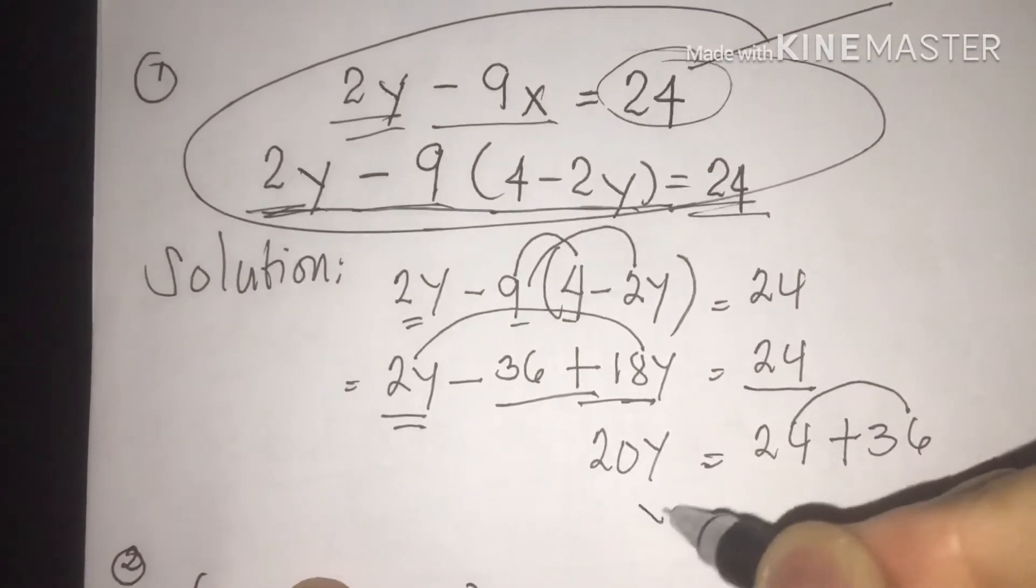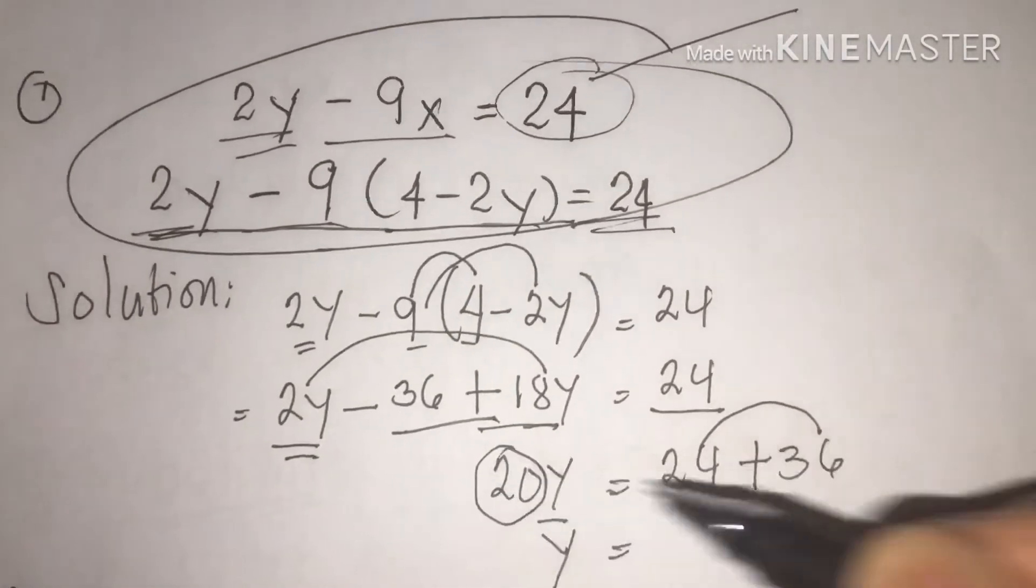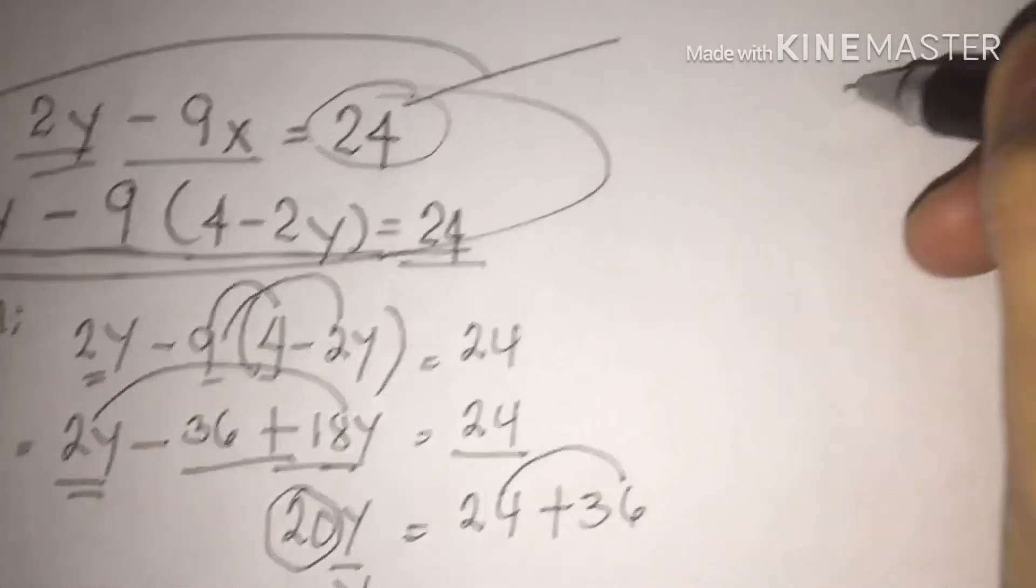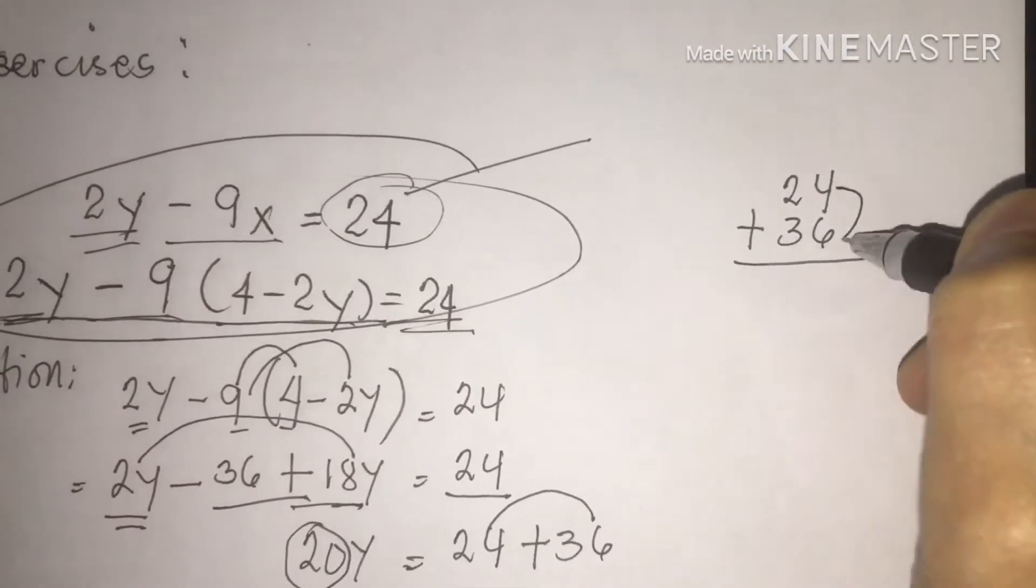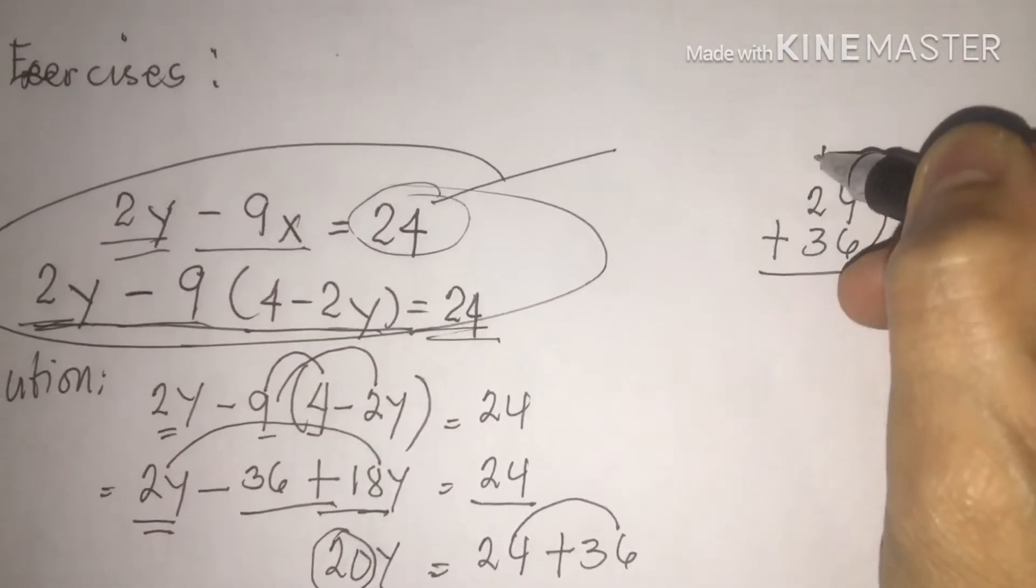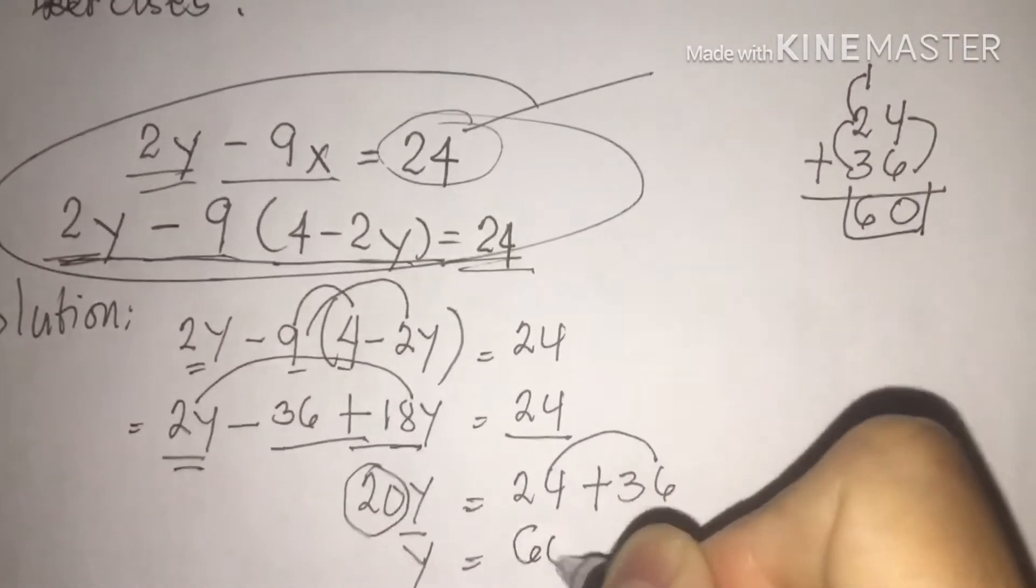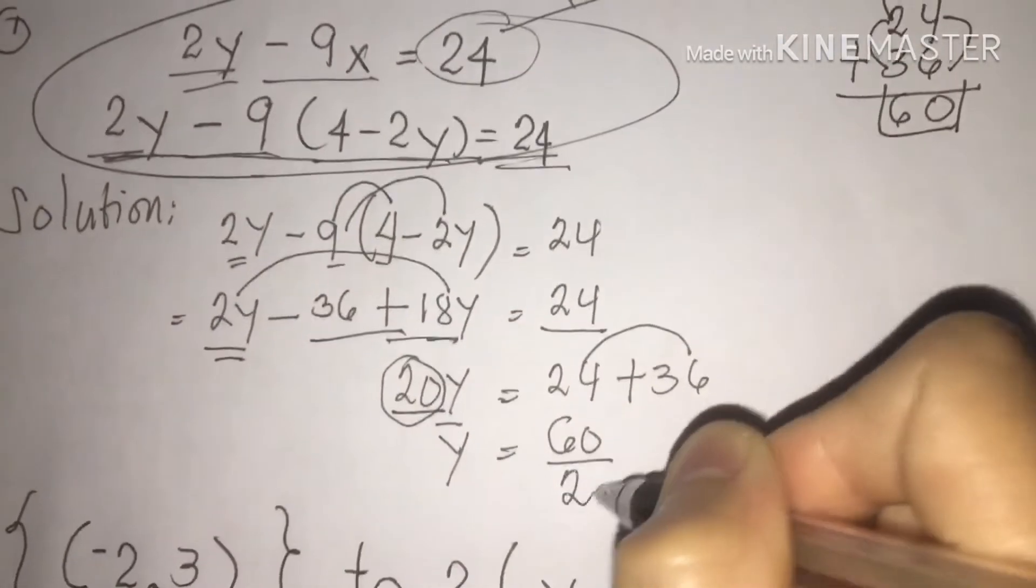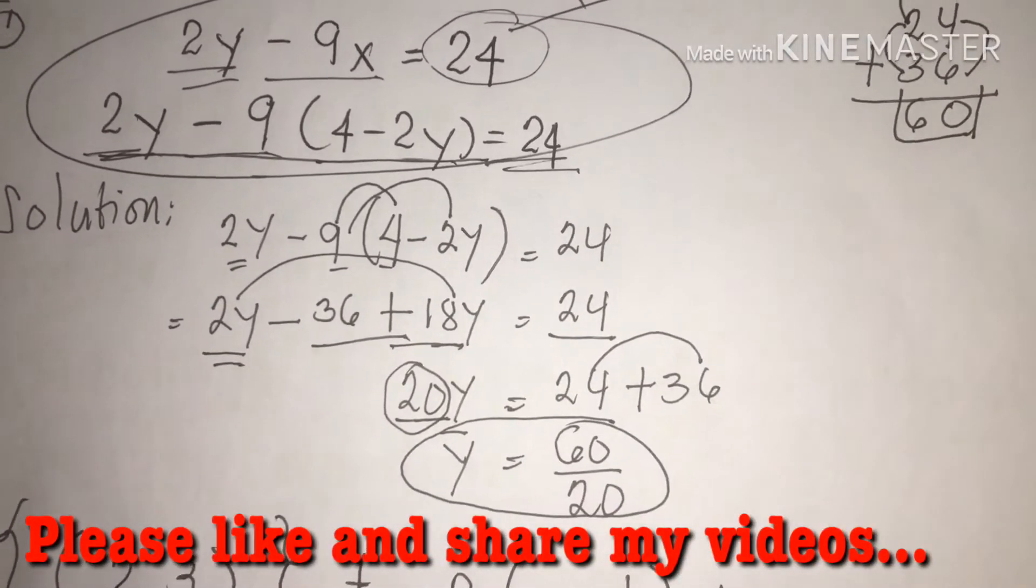So bring down y, this one class. Then, later we are going to write 20. 24 plus 36. I will show you class how we are going to get the sum. 6 plus 4 class is 10, regroup 1. 2 plus 1 is 3, plus 3 is 6. Therefore, 60 class. So we are going to write 60, then carry it away 20 here, bring it down. This will be our answer, but we need to simplify that.